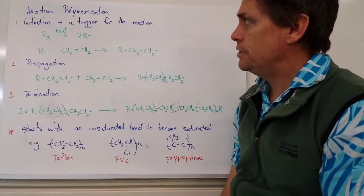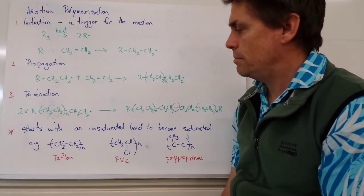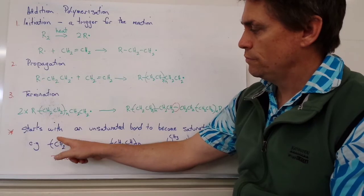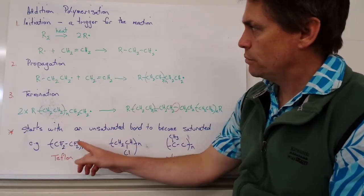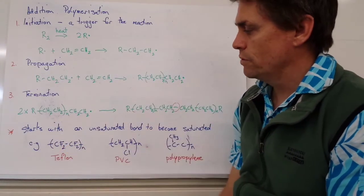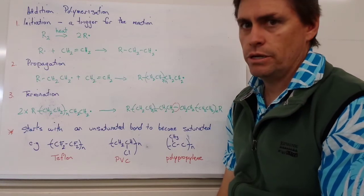Now, some examples of addition polymerization, or some polymers that are quite common, are Teflon, which is a carbon bonded to two fluorines, carbon bonded to two fluorines. So we've substituted our two hydrogens for two fluorines, and we form a compound called Teflon when it's polymerized.